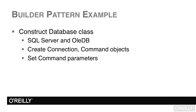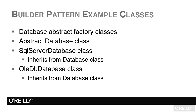For our database class example, we might have SQL Server and OLE DB options, with methods for creating connection and command objects, and setting command parameters. For the classes, we'd have a database abstract factory class with an abstract database class, and then SQL Server and OLE DB database classes that both inherit from it. Those are the classes we actually want to build.